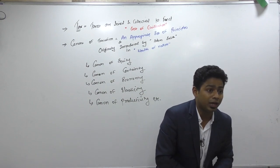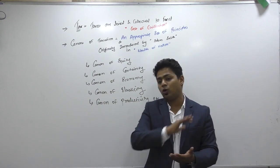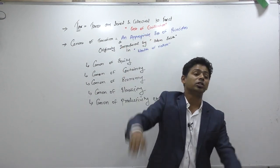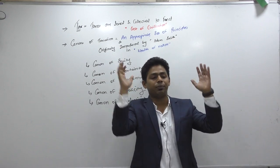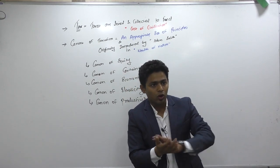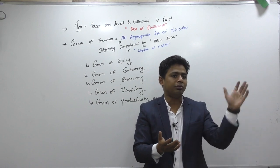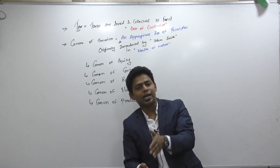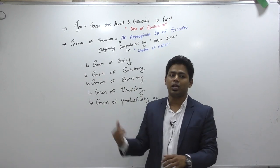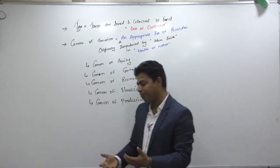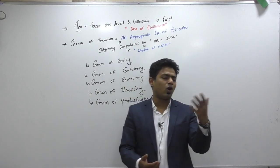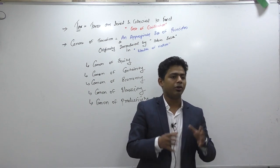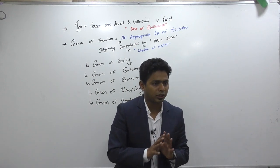Those taxes were charged without any basis — no act, no rule. Whatever came to the king's mind: 60% this time, 70% this time, some rulers charged 100%. Because there was no legislation, no administrative system, there was exploitation of the people. To make it sophisticated, they established acts. Earlier there was even a barter system. There is an amazing history of taxation in India you should read about.